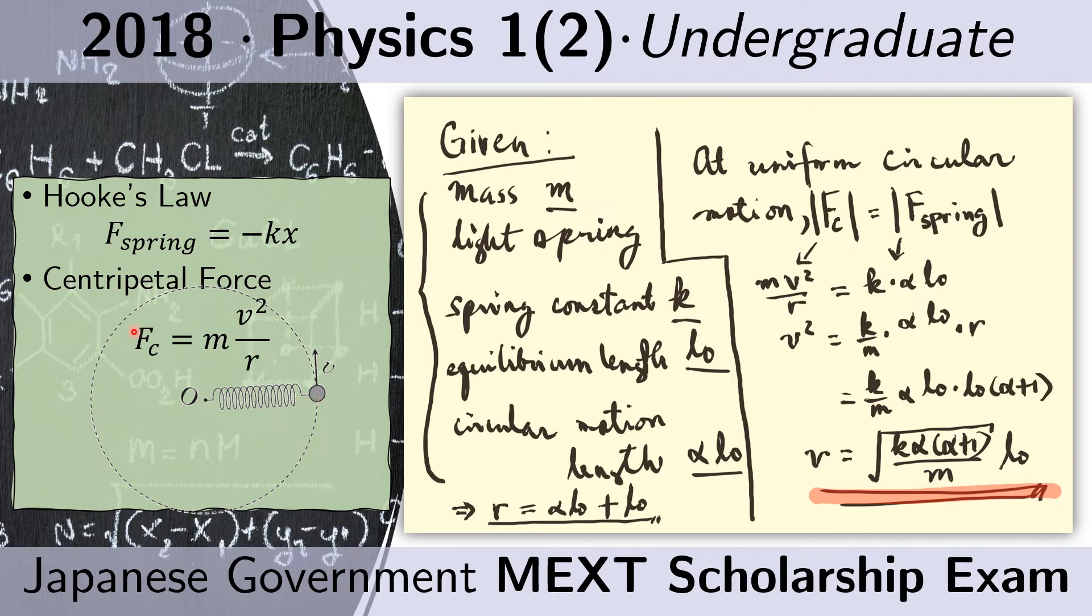So you can think of that as the radius when it's not moving. So it's not really a radius, it's just the length when nothing is moving. And we are also told that when this object is moving in uniform circular motion, the length of the spring is stretched by alpha times L sub 0.